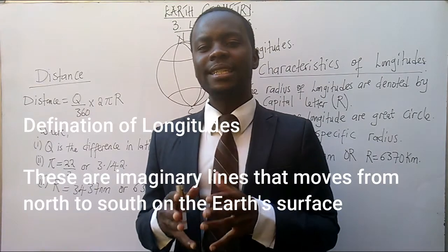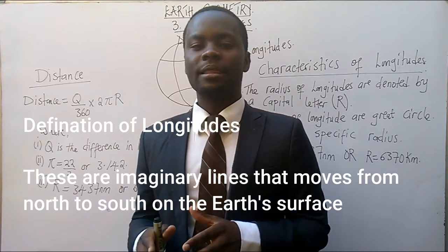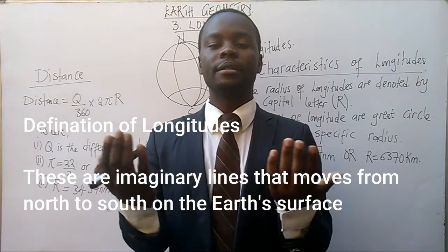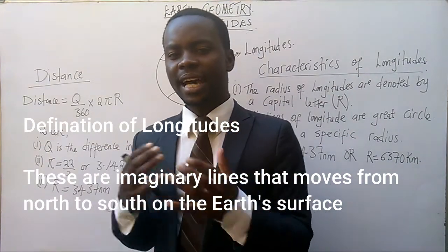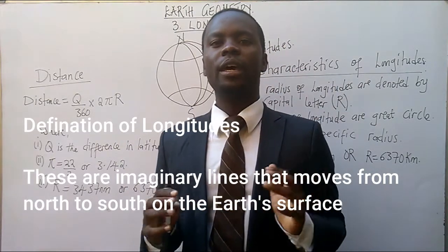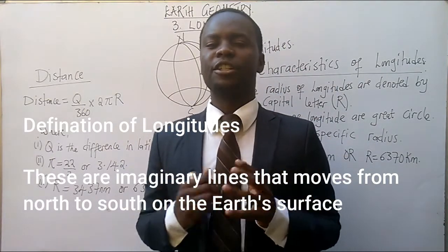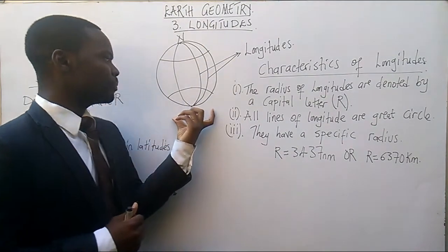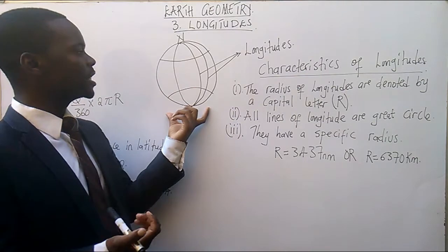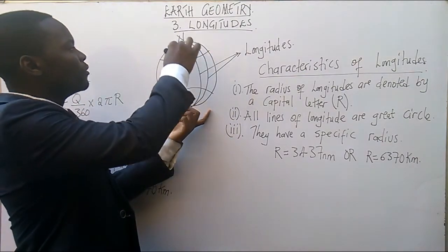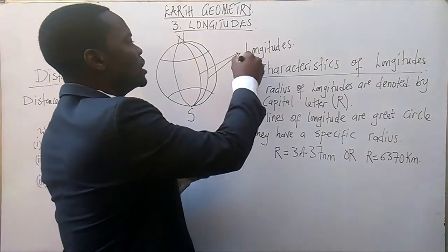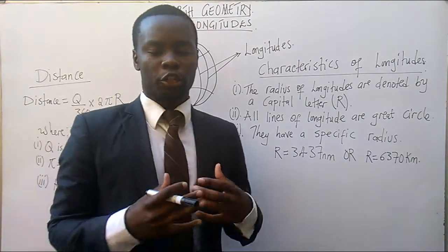Longitudes are imaginary lines that move from north to south on the Earth's surface. I've got a diagram here — this is a sketch of our globe, which is the Earth's surface. These lines which are moving from north to south are the ones which we are calling longitudes.